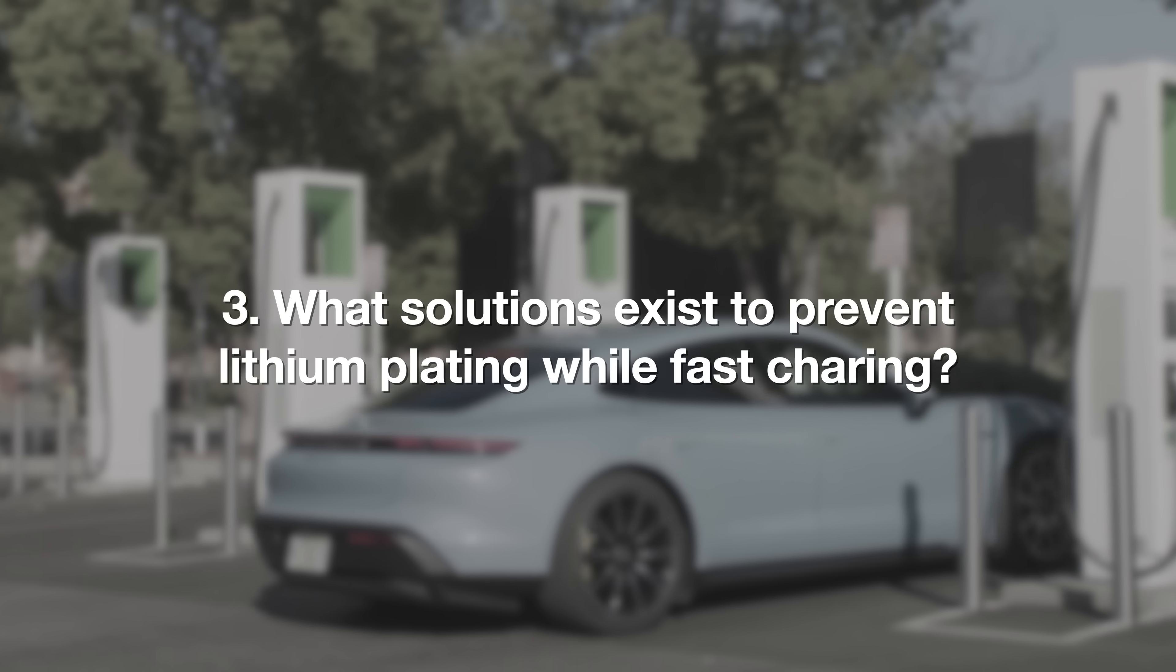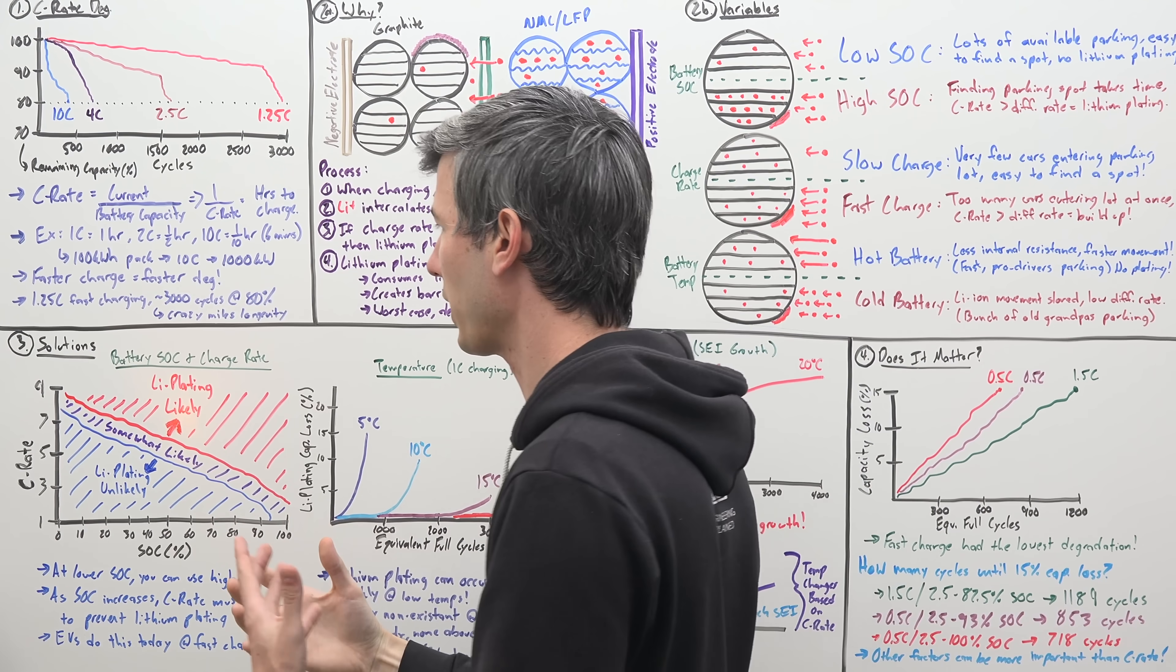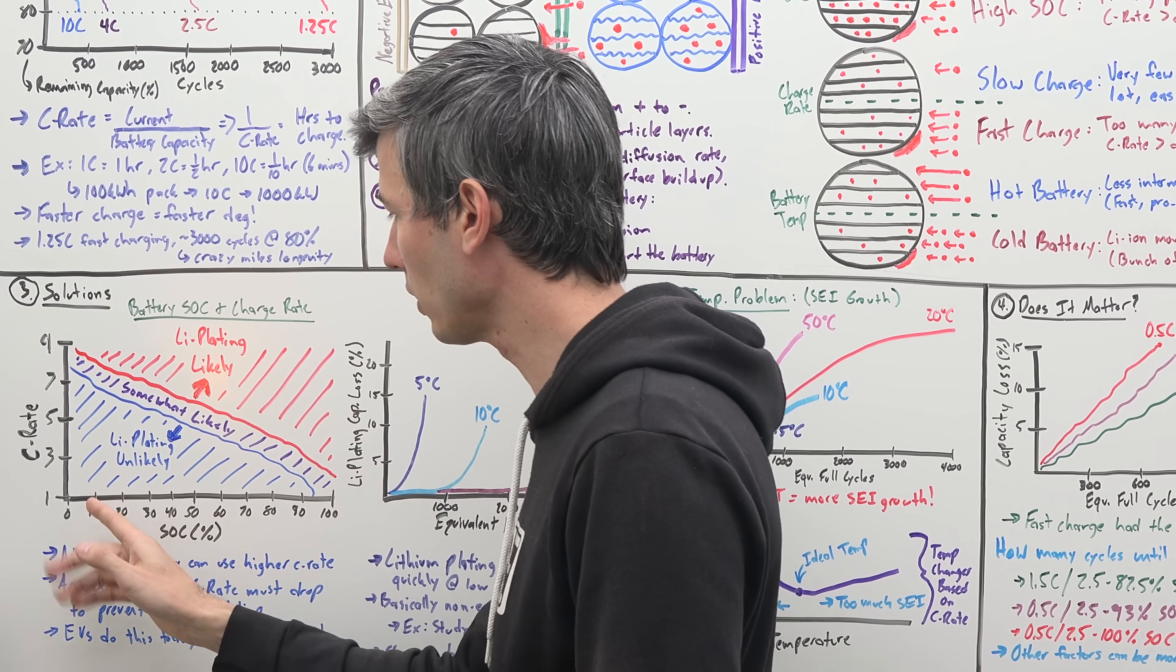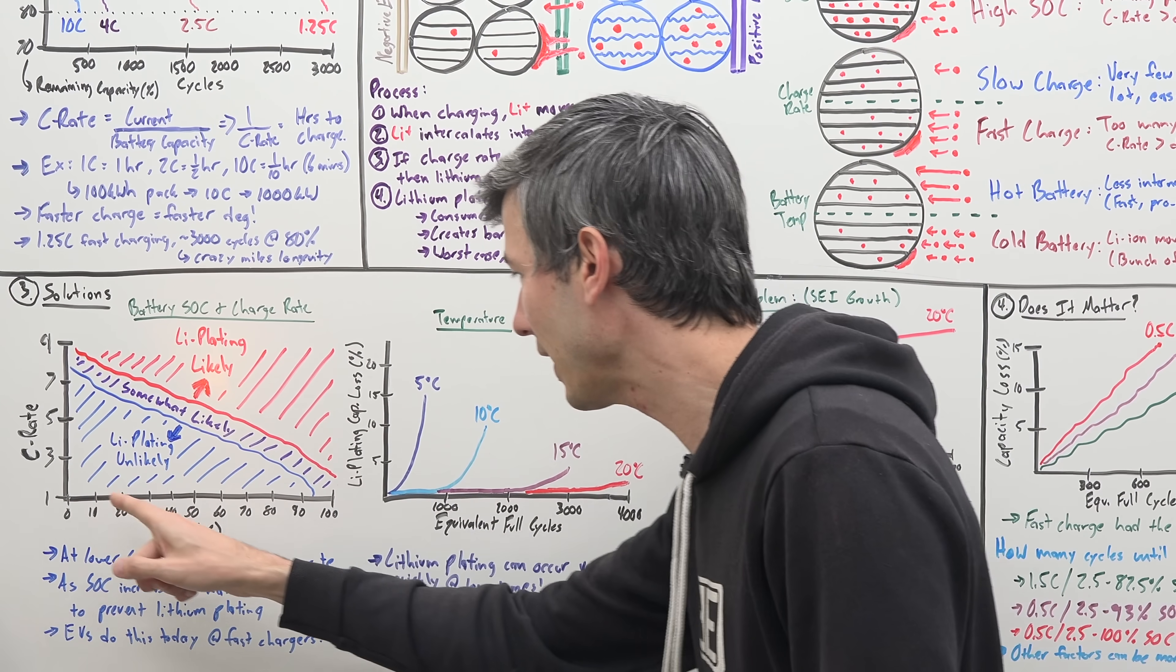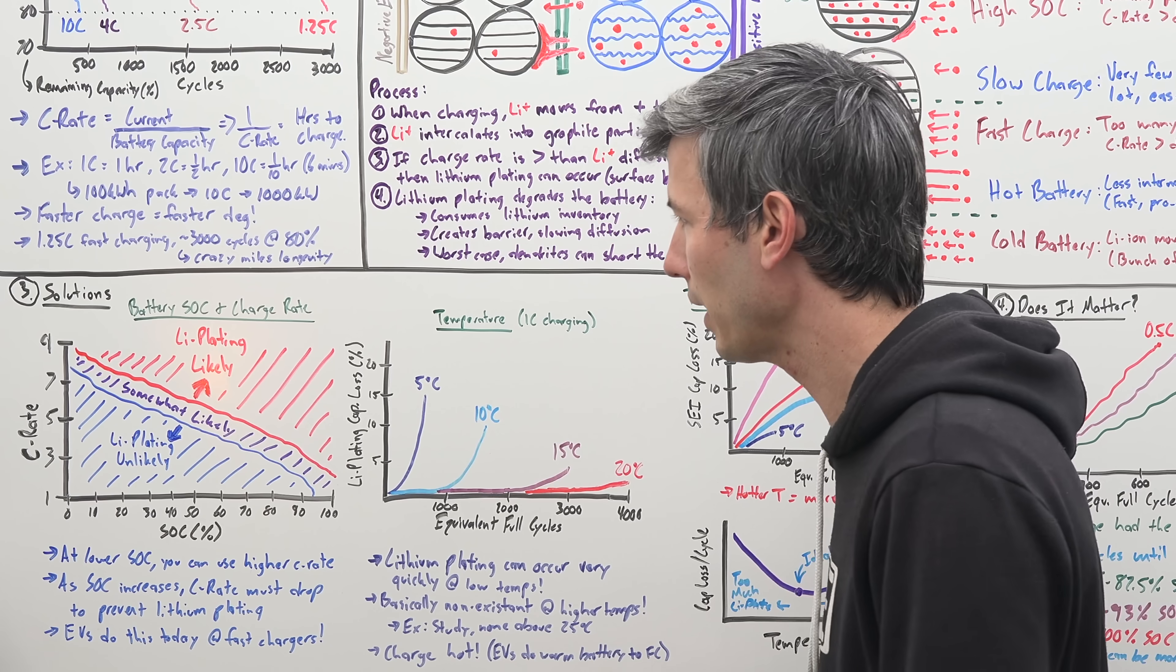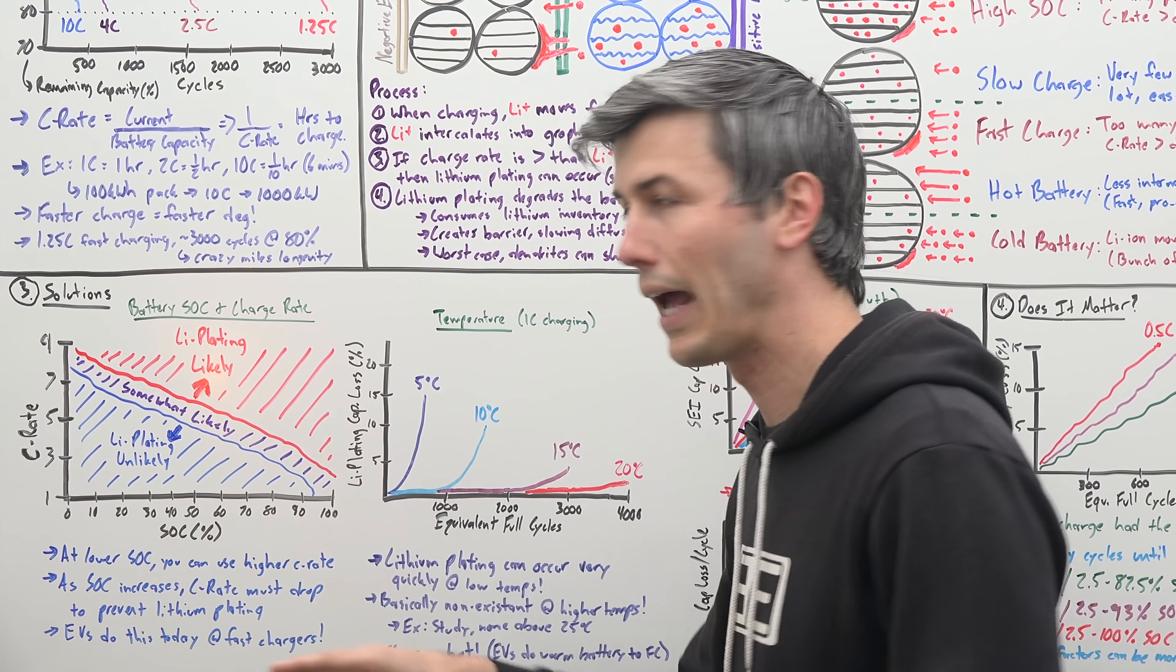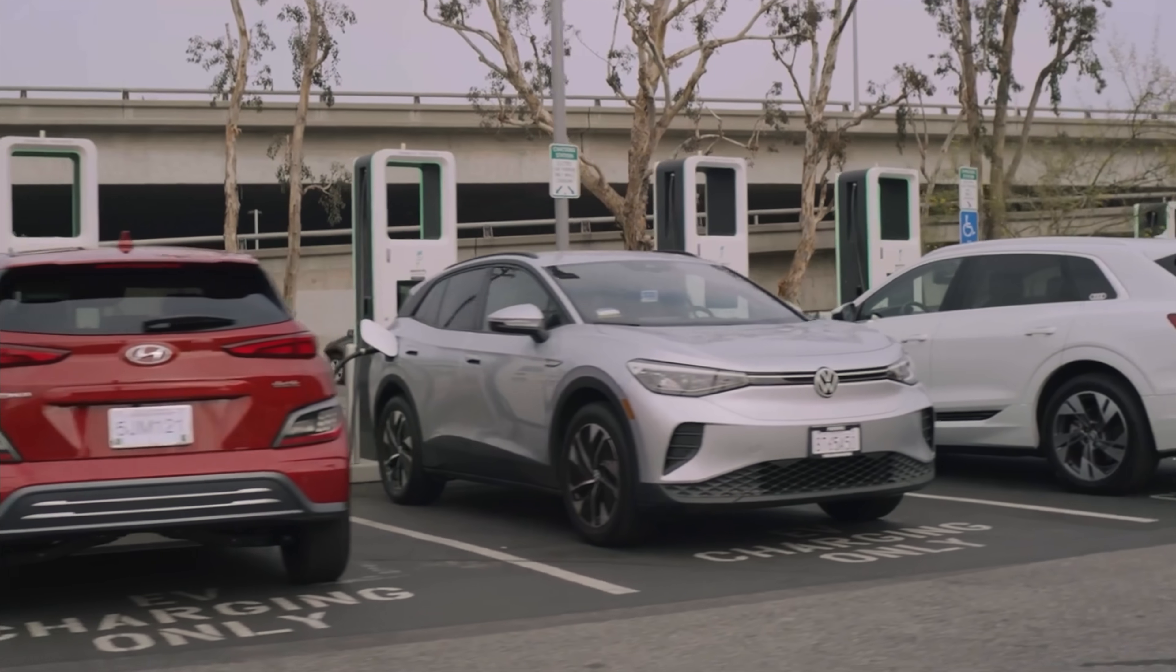Okay, so what solutions exist to prevent lithium plating while fast charging? So let's look at battery state of charge and charge rate first, as solutions and variables that we can manipulate. So a study looked at charge rate versus battery state of charge to find out where was it likely and where was it unlikely that you would have lithium plating occur. And as you can see from this graph, when you're at a lower battery state of charge, you can get away with a really fast charging rate up to like 8C without lithium plating occurring. But as you raise in a higher state of charge, well now you can maybe only be a little over 1C to prevent that lithium plating versus if, say you're at 80% state of charge and you're charging at a 7C rate, it's very likely then they're going to have lithium plating occur. So what you need to do is decrease your charge rate as you're charging that battery to ensure that you don't have any lithium plating. And this is exactly what electric vehicles do today when you pull up to a fast charger and plug it in.